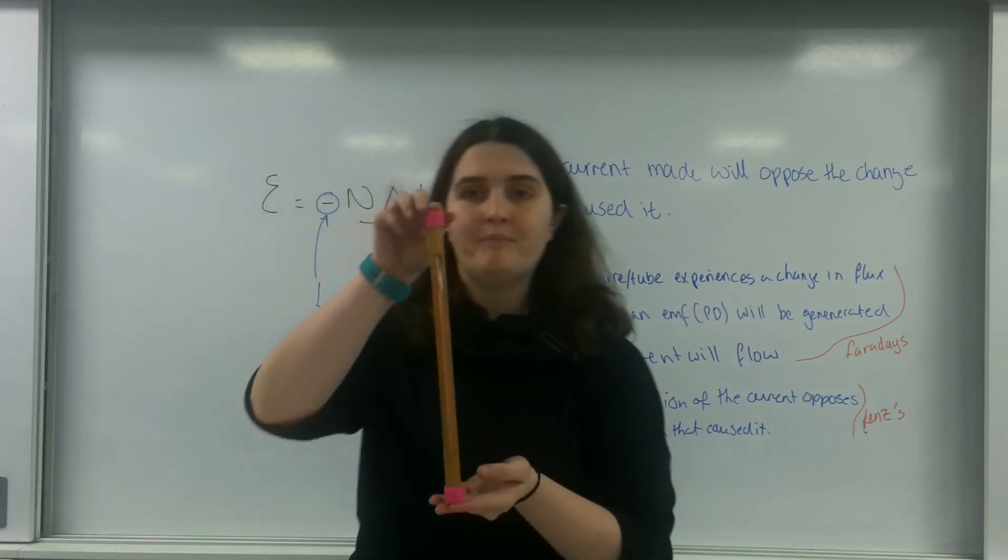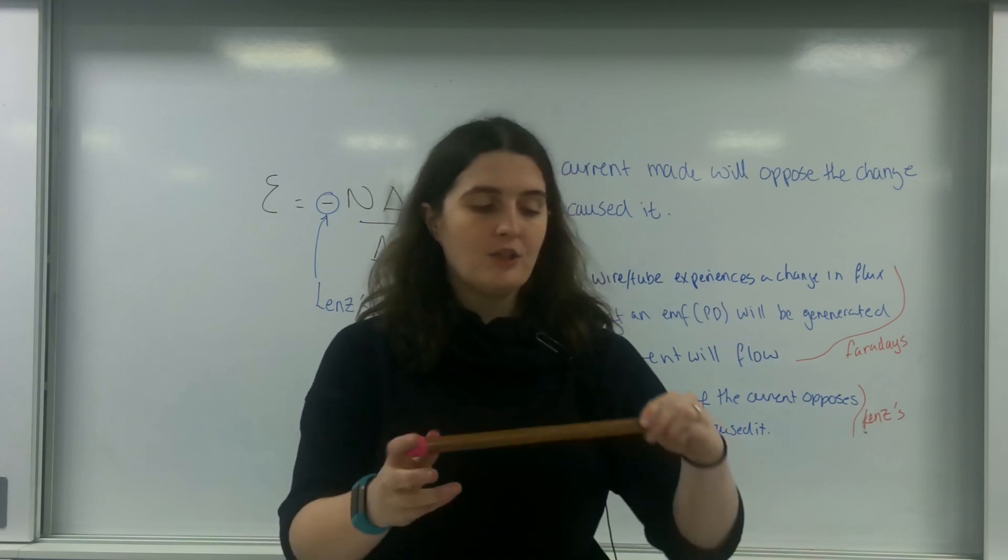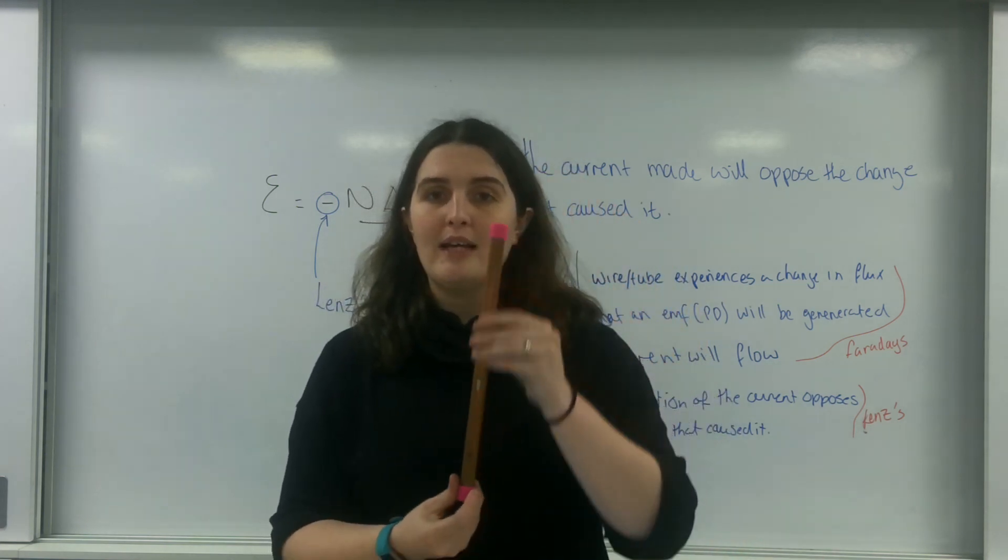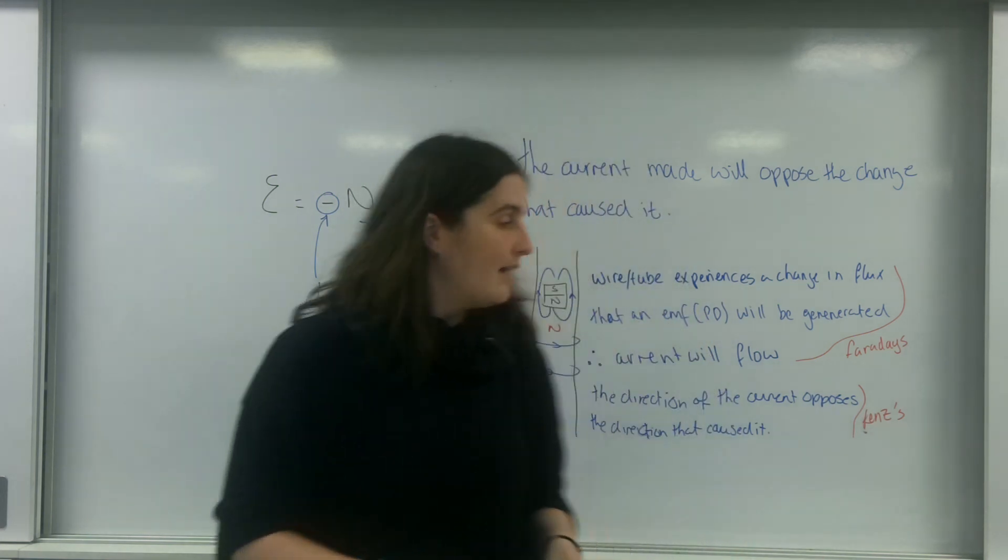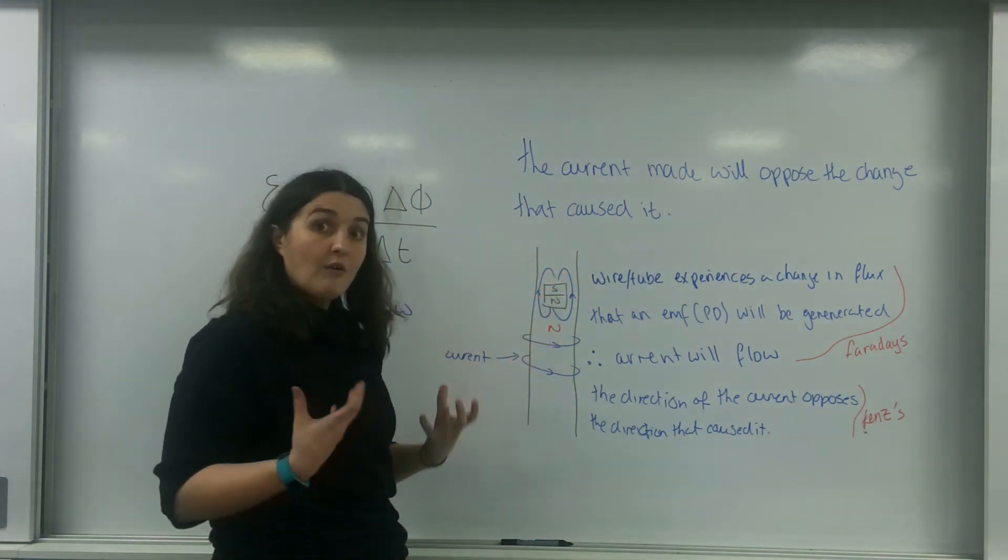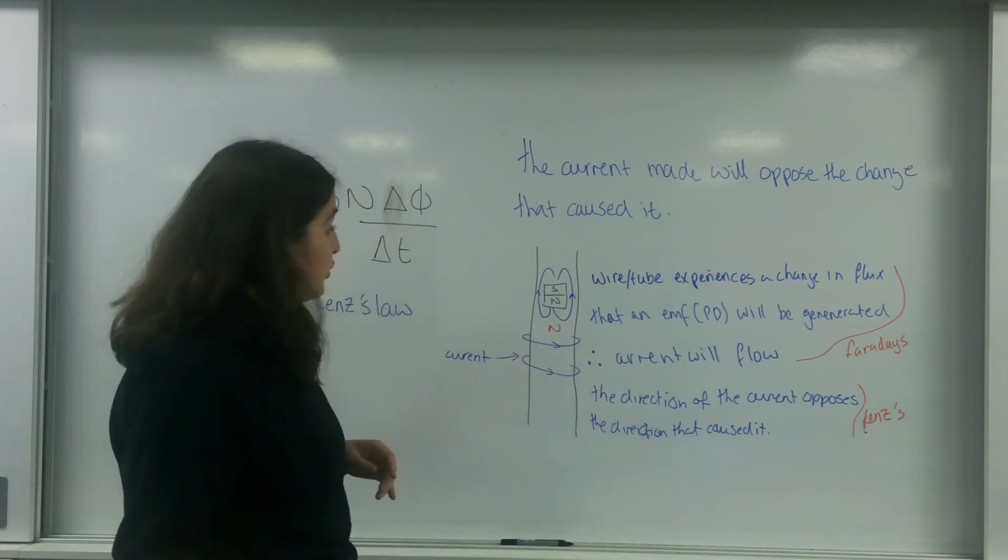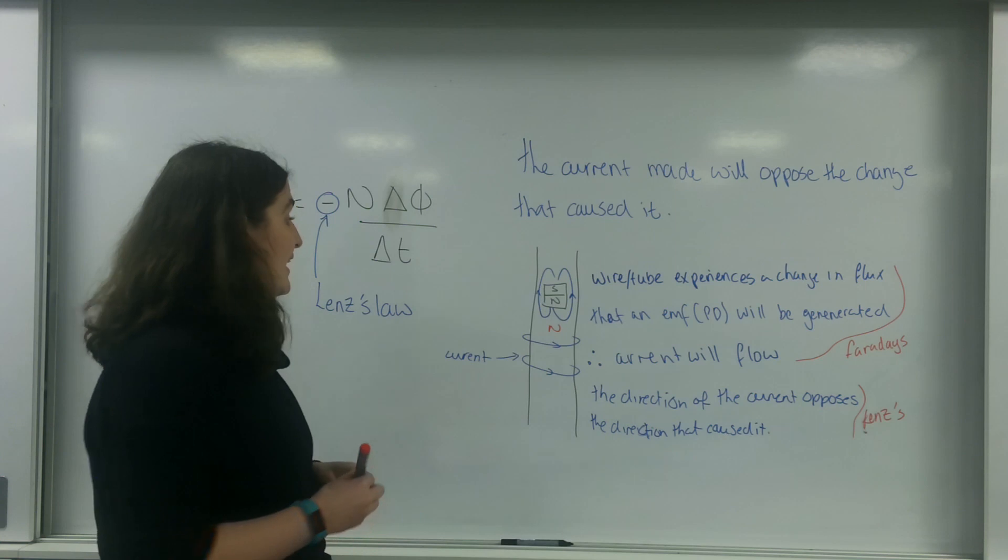So as you can hear here, this object is falling quite rapidly. Well, this one is going to fall quite slowly. And the reason being is because as the object comes towards it, the current that is generated will basically oppose it. And this is all to do with conservation of energy.